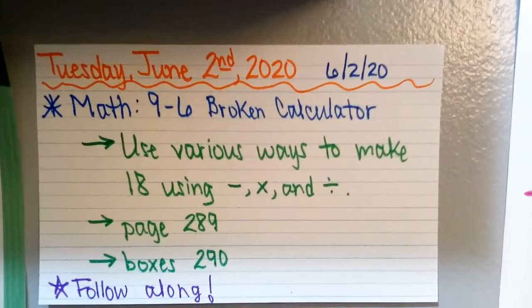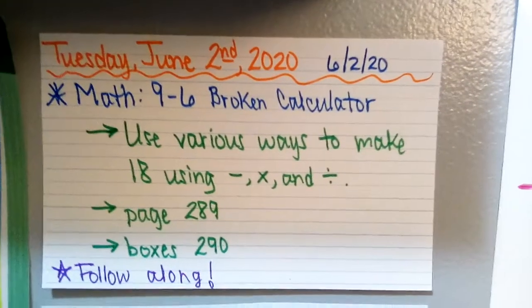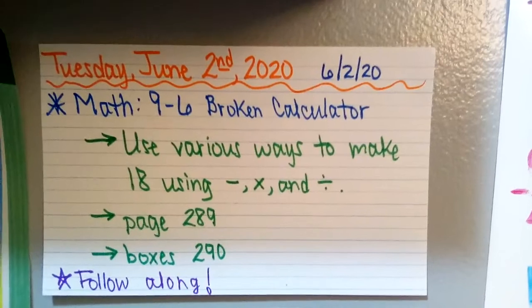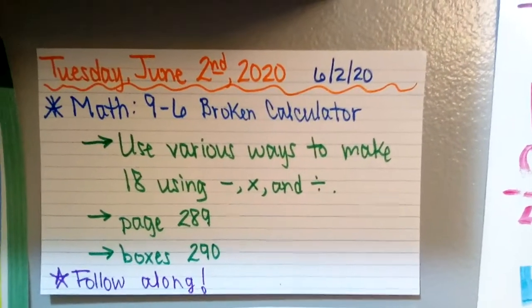Happy Tuesday! Today for math lesson 9-6 we're pretending like we have a broken calculator. And we are going to use various ways to make 18 using subtraction, multiplication, and division. Meet me on page 289.